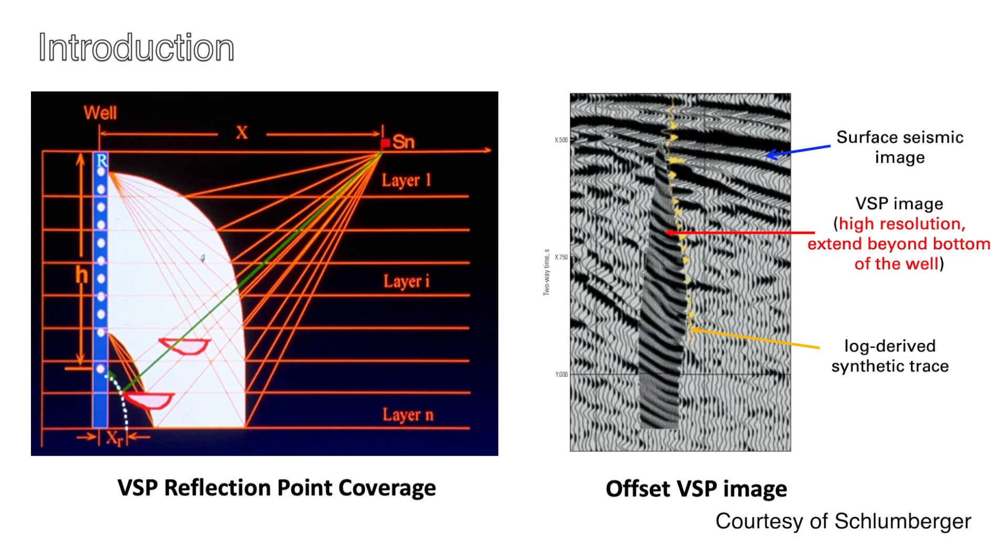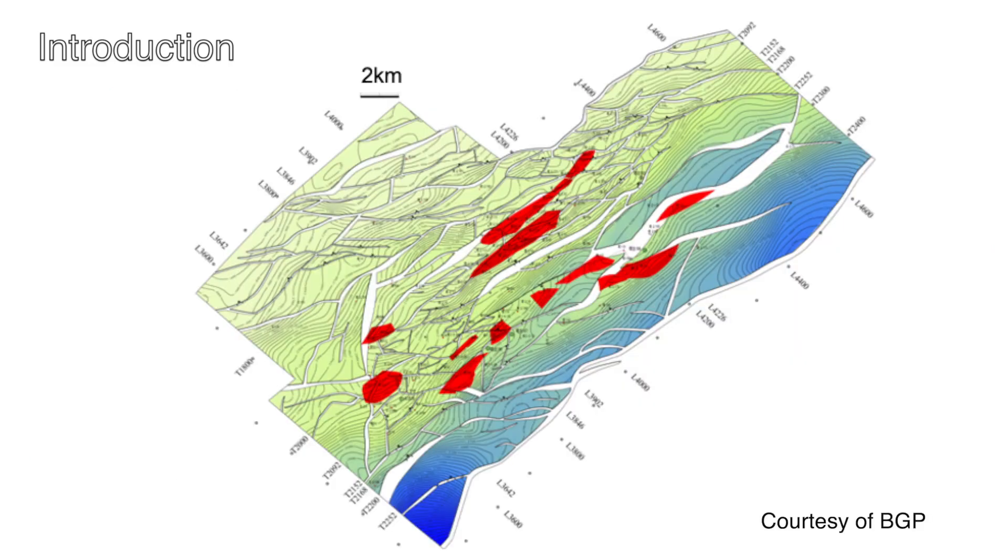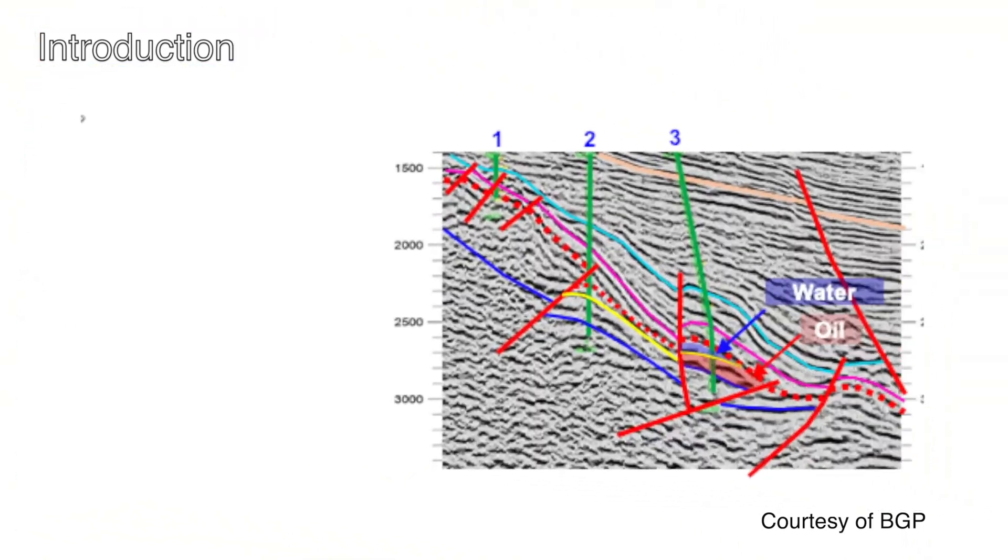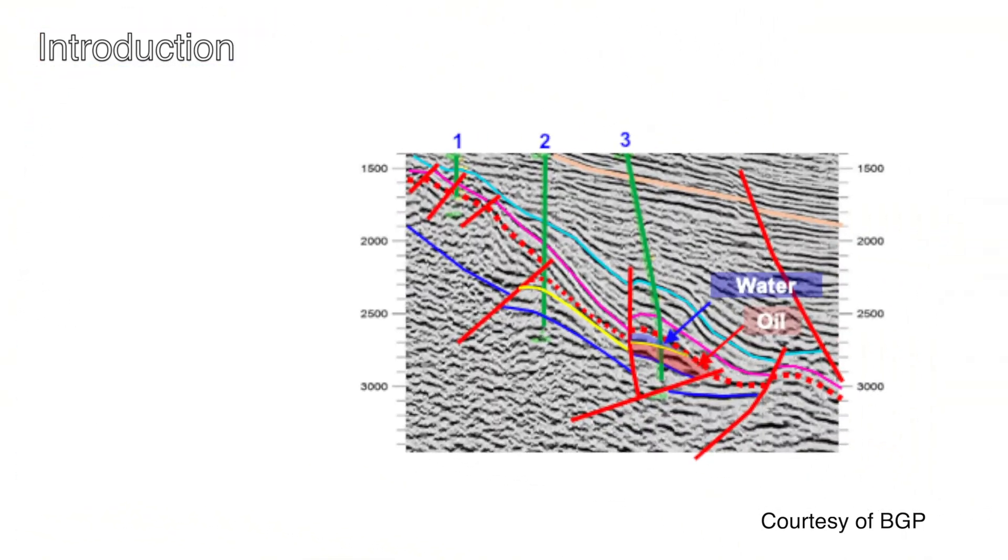At the same time, by avoiding traveling through the shallow weathering layers, the VSP reflections have a high resolution seismic recording. Thus, we expect the VSP image to serve as an enhancement on top of the surface seismic image in local areas where finer images are required.